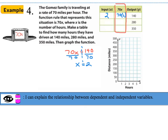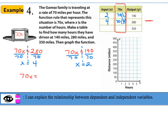Next, 70x equals 280. Drawing the fulcrum down the equal sign and dividing both sides by 70, the value of x equals 4. So the input is 4, and checking: 70 times 4 gives 280. One more: 70x equals 350. Dividing both sides by 70, the value of x equals 5. So 5 is the input value. Checking: 70 times 5 gives 350.